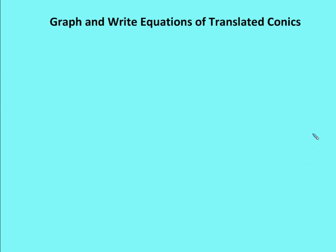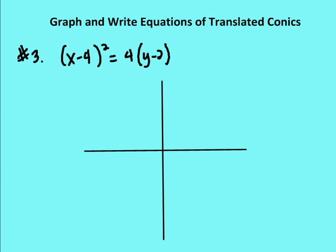In this lesson, we're going to talk about some of the problems involved in writing equations of translated conics. There are three problems from our homework. The first is x minus 4 squared is equal to 4 times y minus 2.